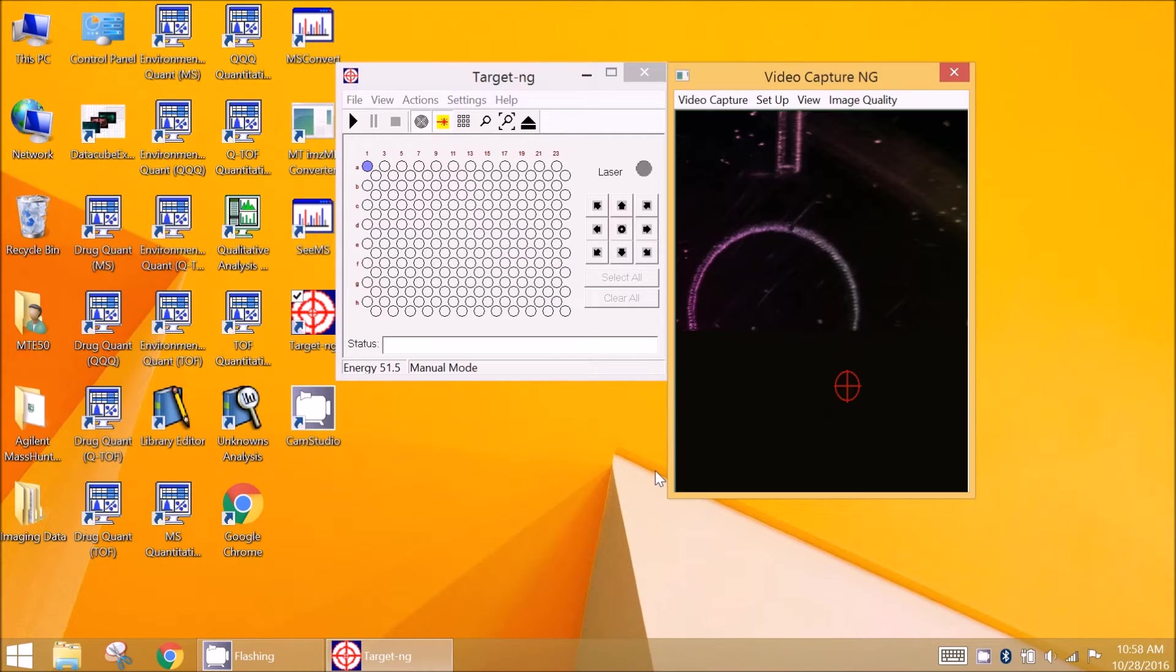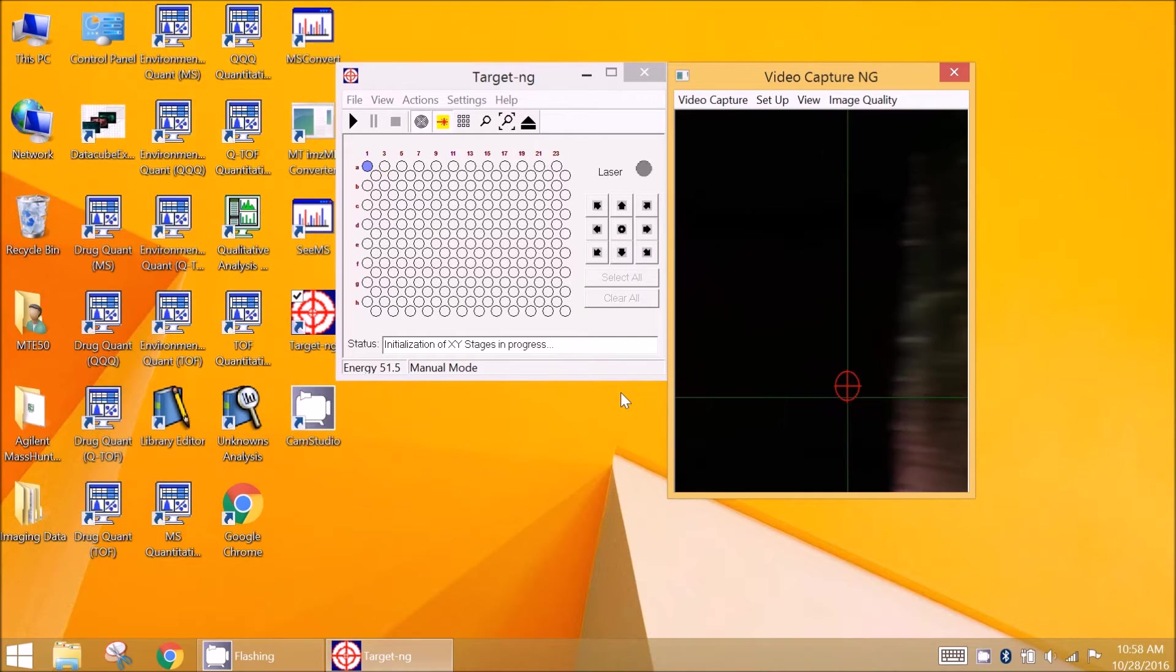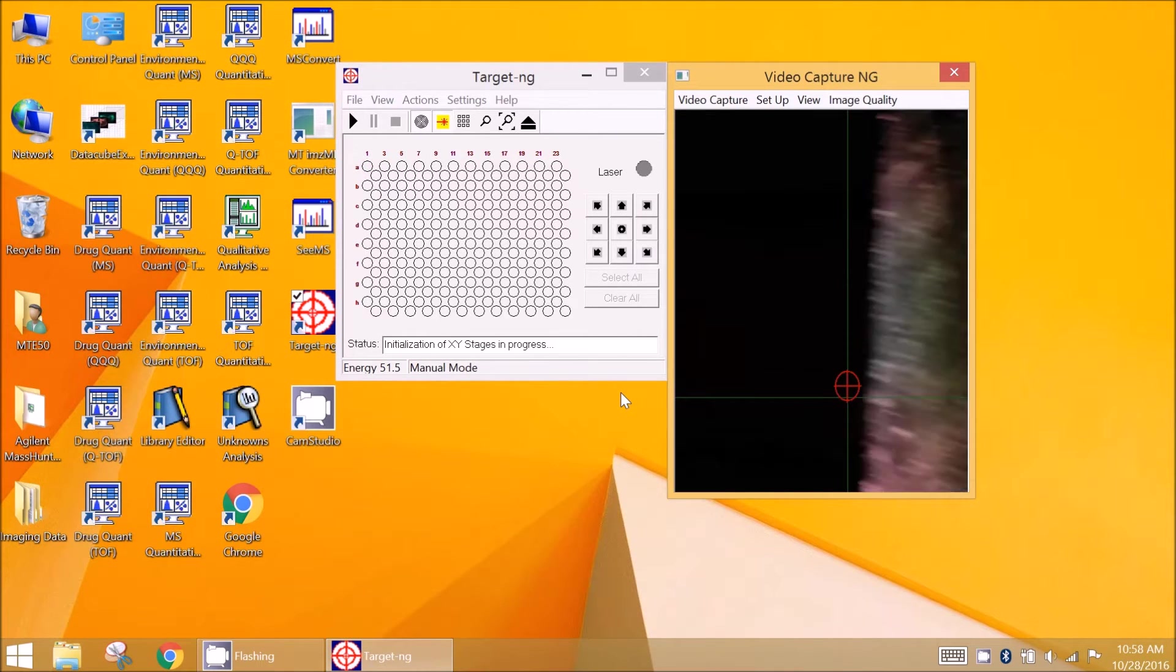Target software controlling the AP MALDI NG Source is started, followed by the XY stage initialization. The target software is typically installed on the same computer used to control the mass spectrometer, provided the MS Control PC is run under Windows 7.